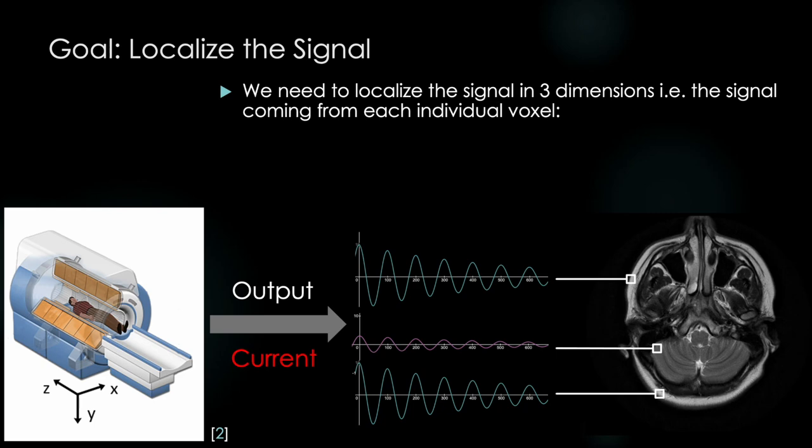We need to localize the signal coming from each individual voxel in three dimensions. Along the z-axis, x-axis, and finally y-axis. And we will do this in a step-by-step, logical, and hopefully sensible way for once. So grab your bell bottoms, grow out your hair, and let's travel back to the 70s before any of this was figured out and put ourselves in the shoes of the MRI physics pioneers with a major, major problem to solve.